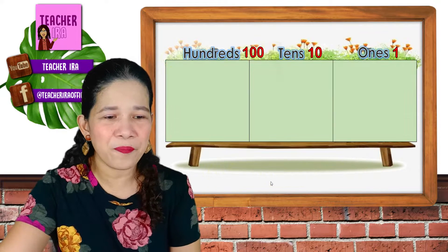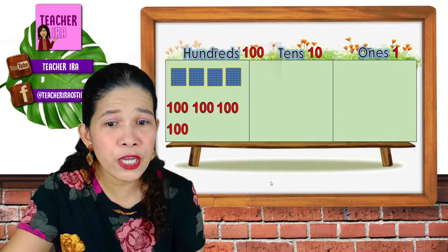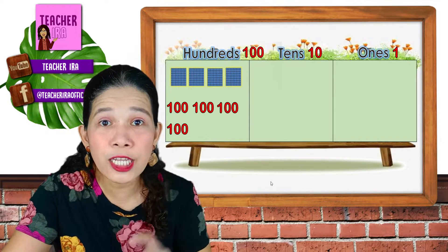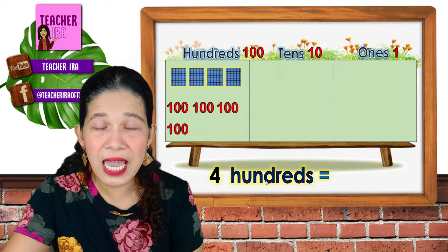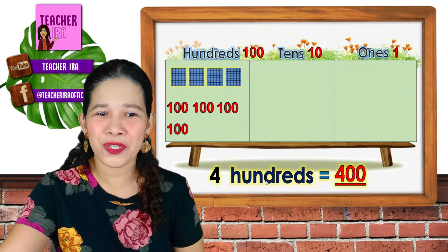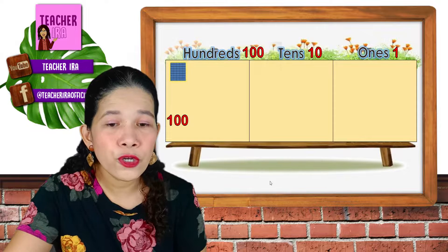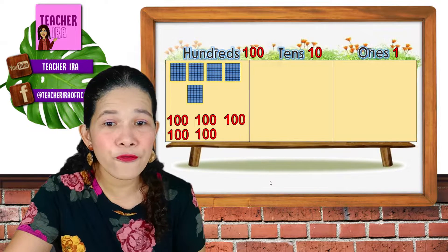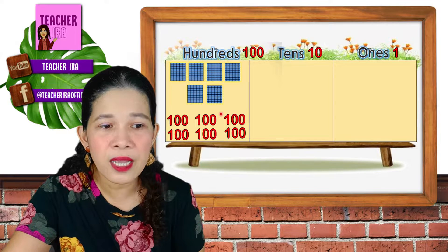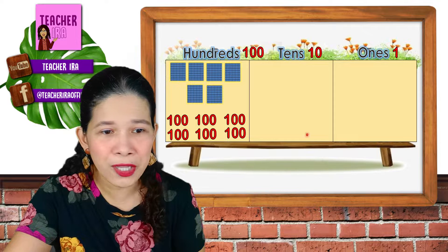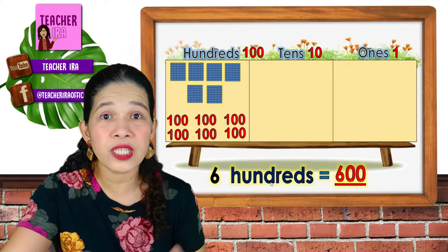How about the next one? Let's count the cubes: 1, 2, 3, 4. There are 4 cubes, and each cube represents 100, so that means 100, 200, 300, 400. Since we don't have anything in the 10s and 1s, that's 400. Next: 1, 2, 3, 4, 5, 6. We got 6 cubes, which means 100, 200, 300, 400, 500, 600. No 10s, no 1s, so that means 600. Why just 600? Because there's a 0 in the 10s place and a 0 in the 1s place.